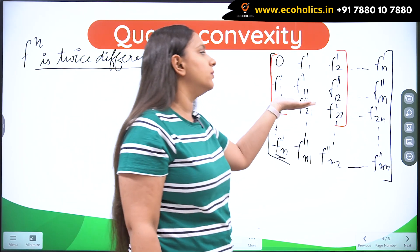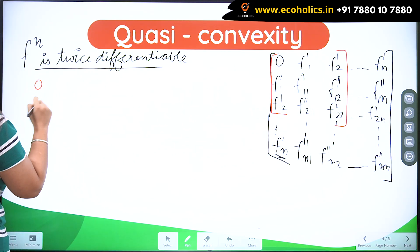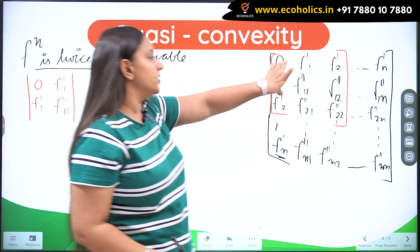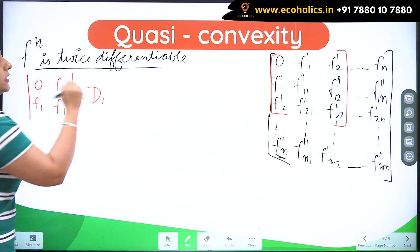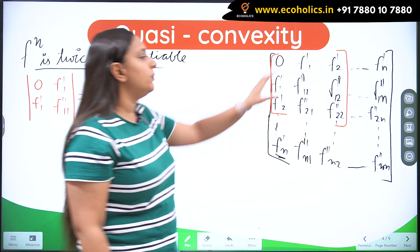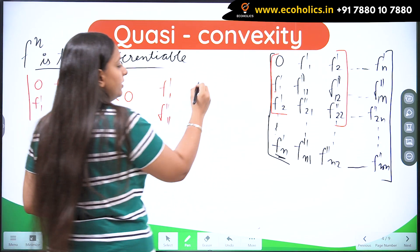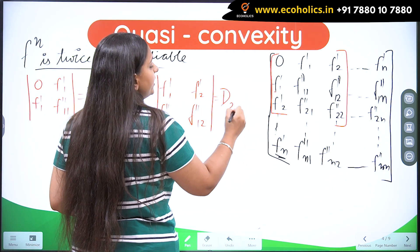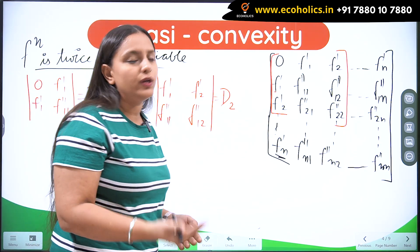For quasi-convexity, you have to check the determinants of the sub-matrices. The first sub-matrix D̄₁ is formed by the first two columns and first two rows — that is 0, f′₁, f′₁, f″₁₁ — and its determinant should be negative. Similarly, D̄₂ uses these two columns and these two rows, giving 0, f′₁, f′₂ / f′₁, f″₁₁, f″₁₂ / f′₂, f″₁₂, f″₂₂ — I have discussed these concepts in detail in the quasi-concavity video, so you can go there for a more elaborate explanation.